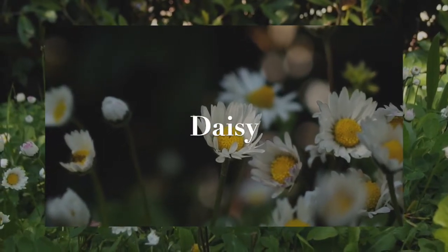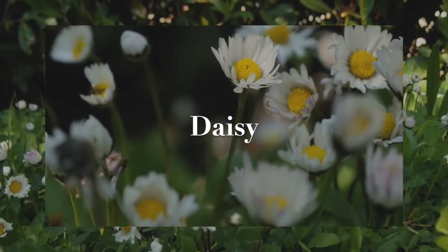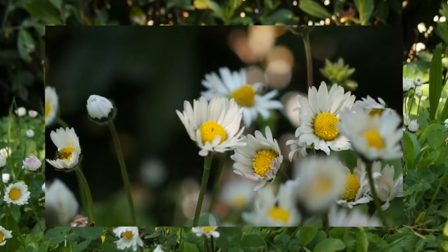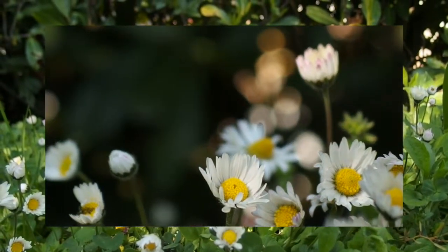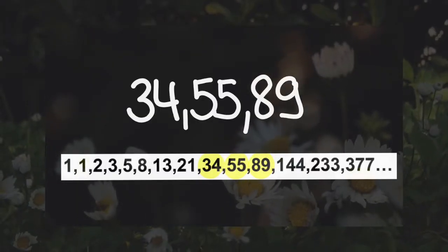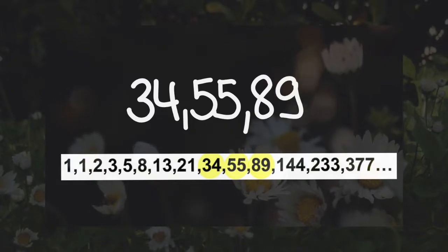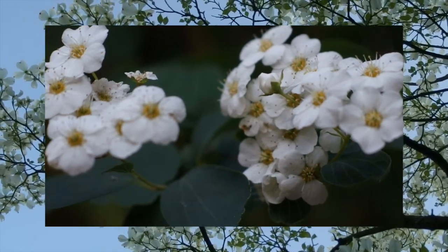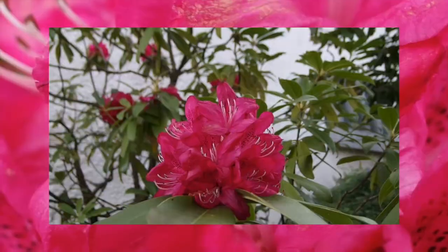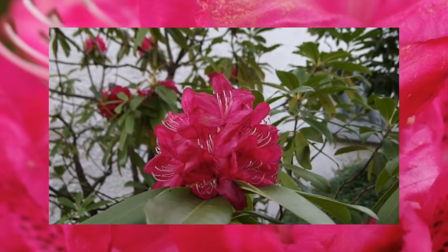The simplest example is the daisy. Almost always the number of petals is a Fibonacci number. Daisies commonly have 34, 55, or 89 petals. Find a flower in your garden and count its petals. It most probably will be a Fibonacci number.